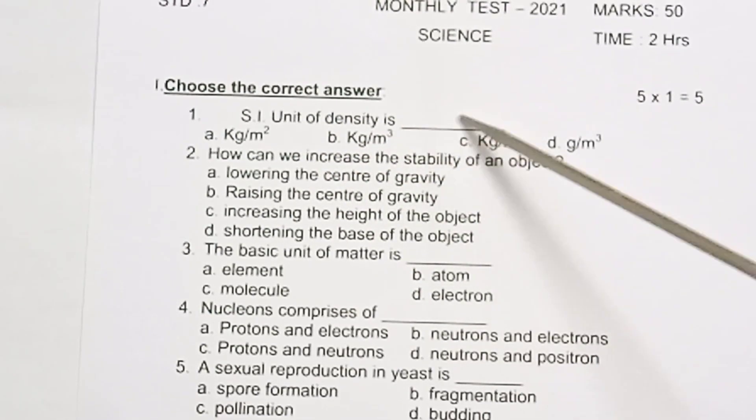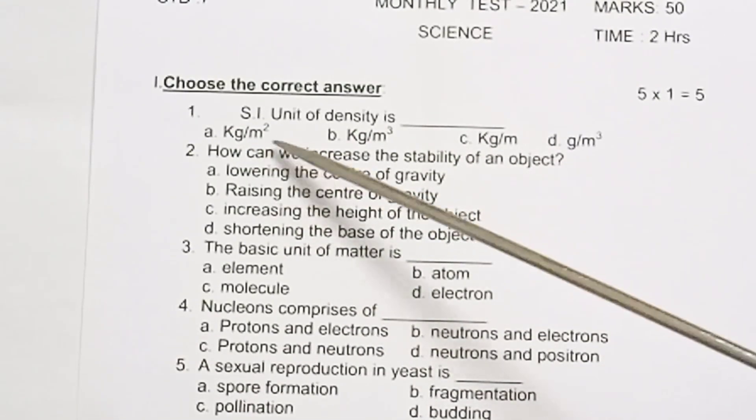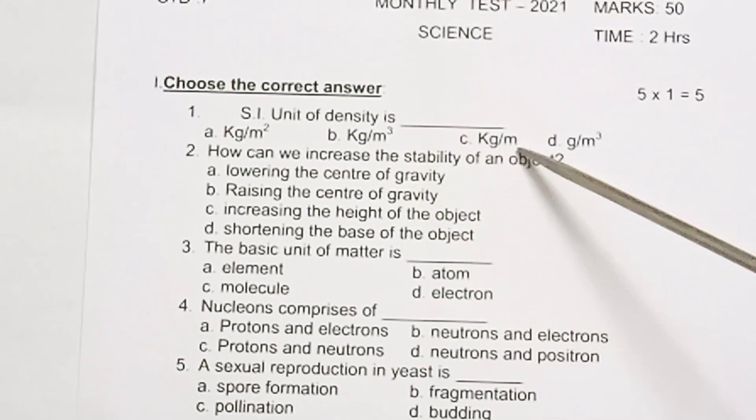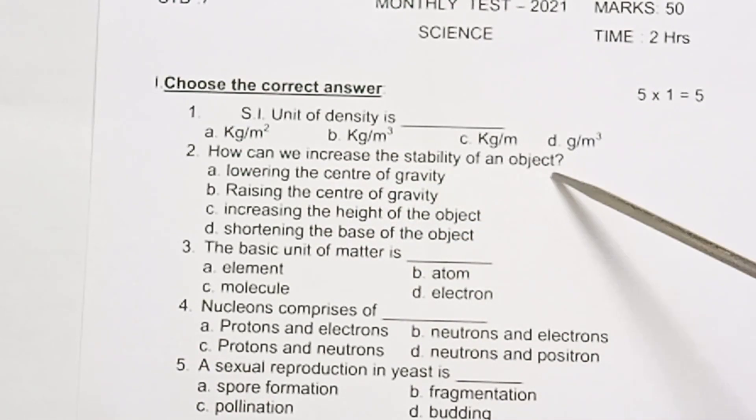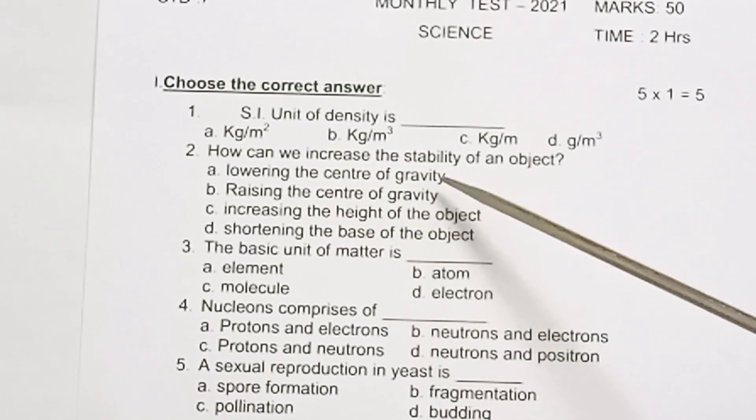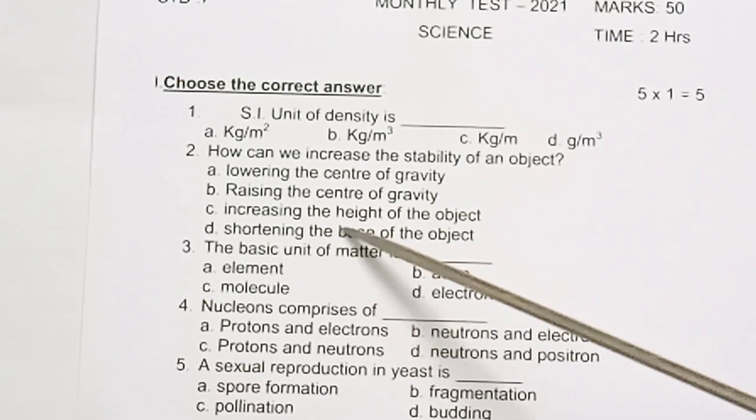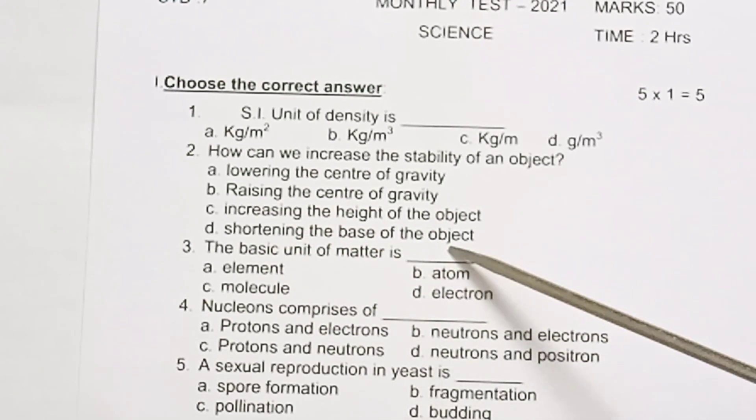SI unit of density is: A. kilogram per meter square, B. kilogram per meter cube, C. kilogram per meter, D. gram per meter cube. Second one: How can we increase the stability of an object? A. lowering the center of gravity, B. raising the center of gravity, C. increasing the height of the object, D. shortening the base of the object.